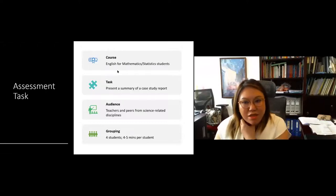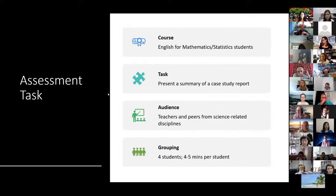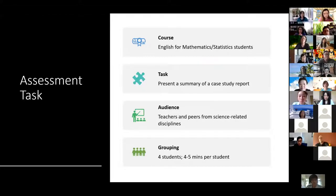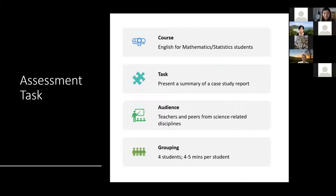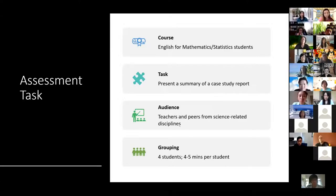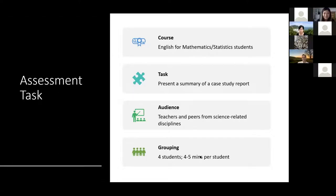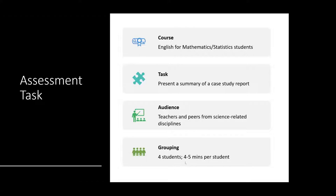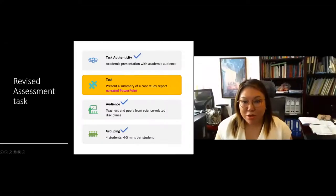The course is English for mathematics and statistics students. They are supposed to read a case study report and present a summary to their peers — a task they would normally do in the curriculum. The faculty asked us to set this as an assessment and help students with their presentation skills. The audience would be teachers and peers from science-related disciplines, and students present in groups of three to four, each presenting for about four to five minutes. Students are assessed individually.